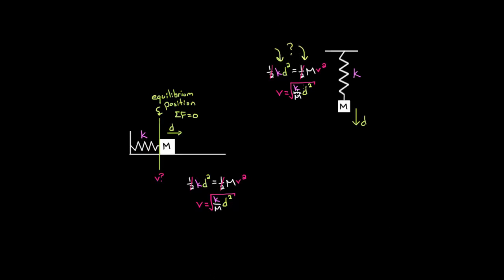Why don't we have to take into account the gravitational potential energy when doing conservation of energy in this equation? That's what I want to prove in the rest of this video. If you just wanted the result, you're good. But I suggest you watch the rest, because knowing why you can ignore the MGH in this calculation gives you better insight into what we really mean by D, H, and V, as well as what we really mean by the equilibrium position — and that will conceptually aid you if you get a more challenging problem.